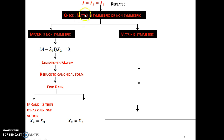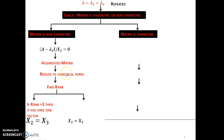We have to check whether the eigenvector is repeated or non-repeated. If the rank is 2, then it has only one eigenvector. That means if the matrix is non-symmetric, you get an augmented matrix, reduce it to canonical form, and find the rank. If that reduced matrix rank is 2 for a 3x3 matrix, then it has only one eigenvector — meaning you won't have three eigenvectors as a final answer, only two. Whereas if the rank is 1, then it will have two eigenvectors, making the total answer three.